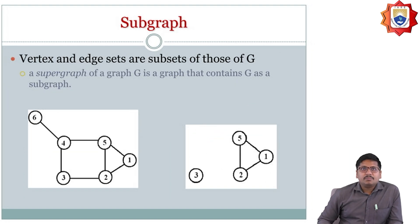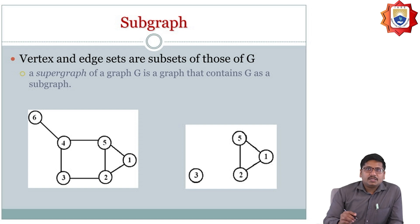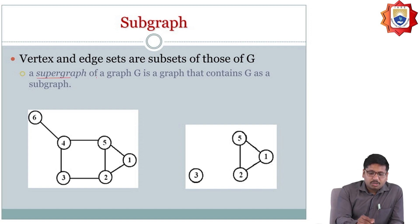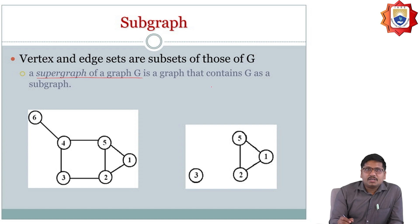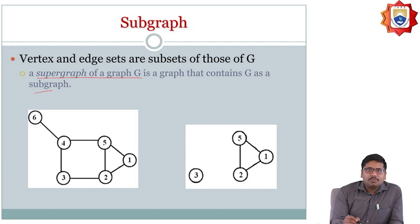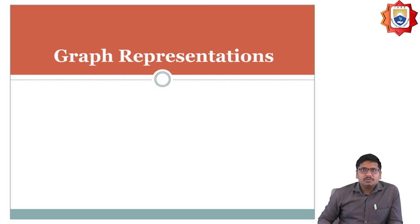Subgraph: the vertex set and edge set are going to be a subset of the original graph. A supergraph of the graph is a graph that contains G as a subgraph.